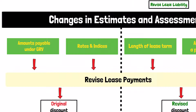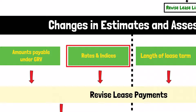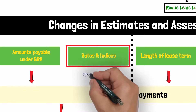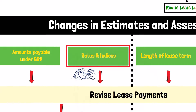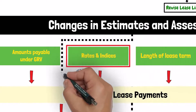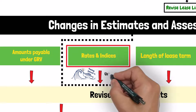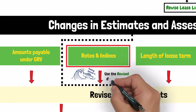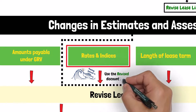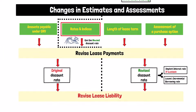There is one exception here concerning the changes in the rates and indices on which the future lease payments are based. If the change in the future lease payments resulted from a change in floating interest rates, in this case the original discount rate should not be used. Instead, the revised discount rate should be used to reflect the changes in the floating interest rate.